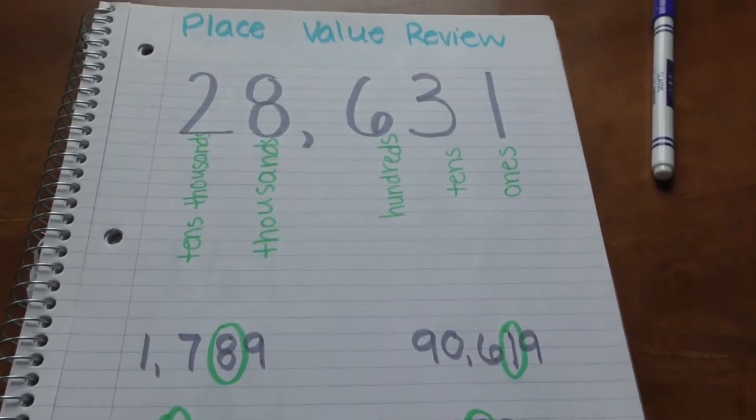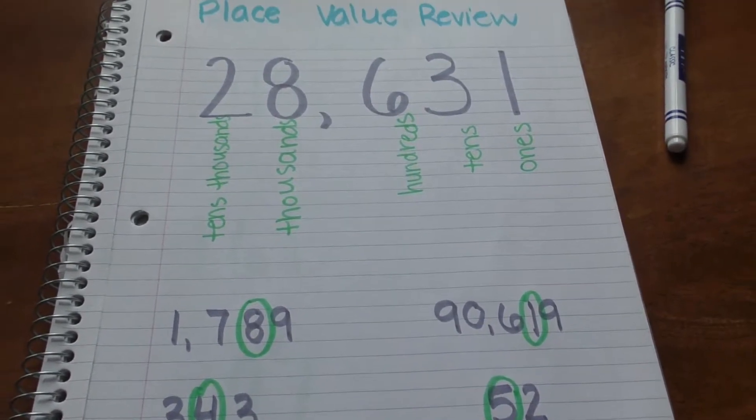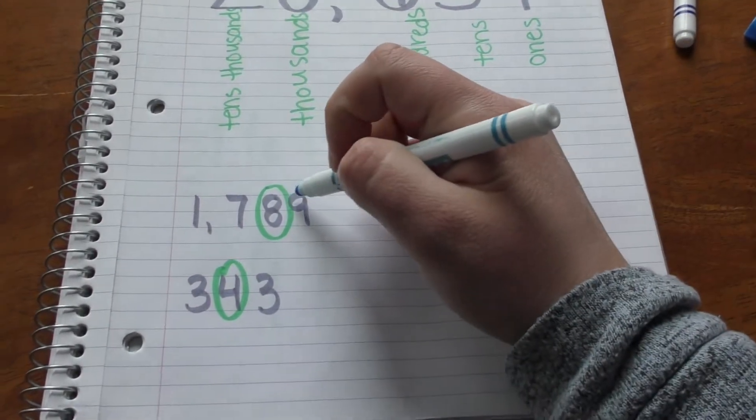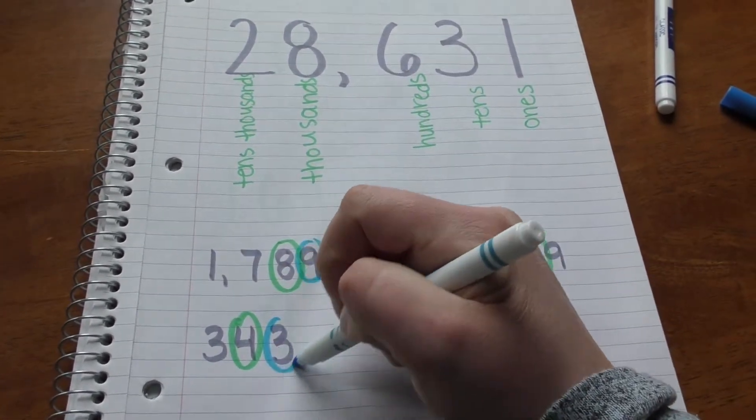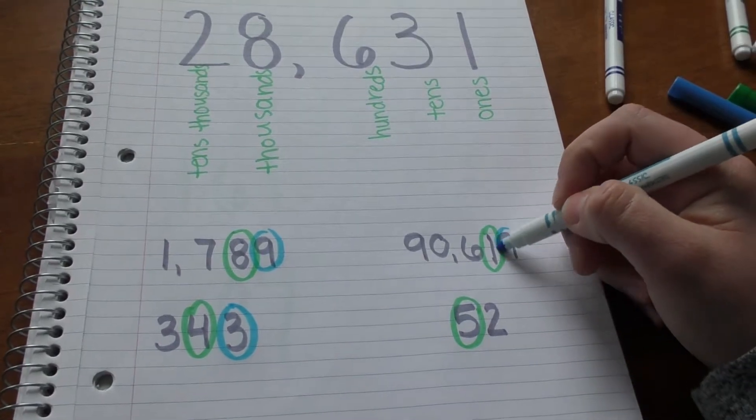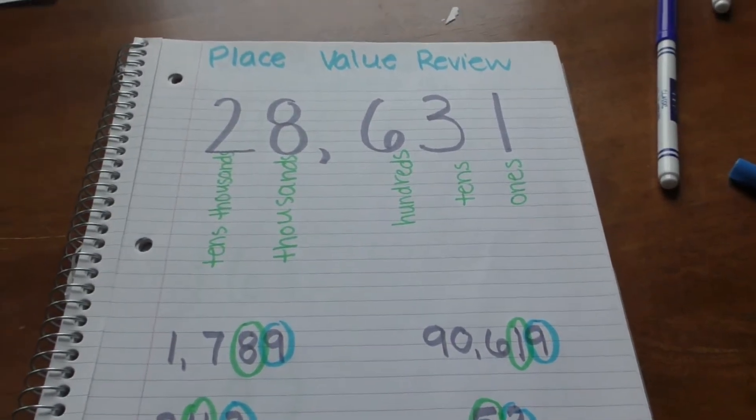Now if I wanted to circle all of the ones places, I would circle my nines because it's in my ones place, 3 is in my ones place, 9 is in my ones place, and 2 is in my ones place.